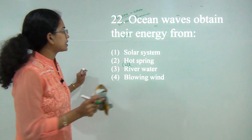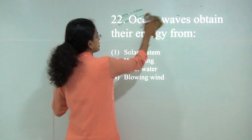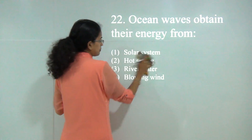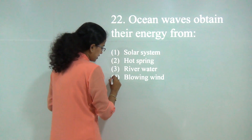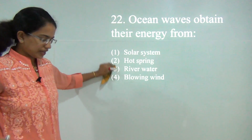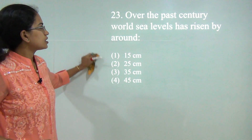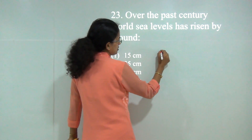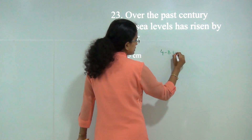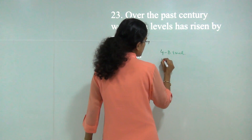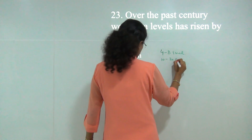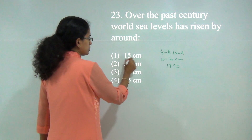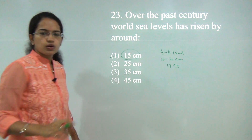Next: ocean waves obtain their energy from blowing wind. If the blowing wind is stronger, the waves are more intense, so the correct answer is 4 — blowing wind. Next question: over the past century the world sea level has risen by 4 to 8 inches, or about 10 to 20 centimeters. On average that is about 17 centimeters, and the nearest option is 15 centimeters, so the answer would be 1.